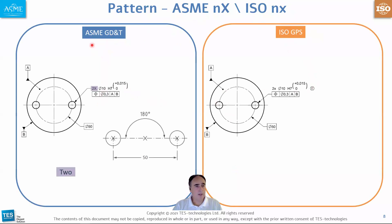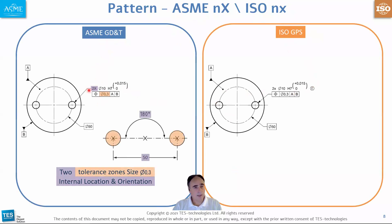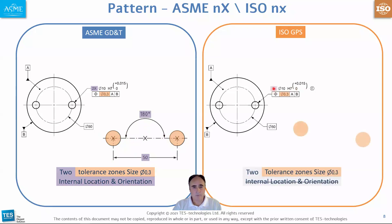What's the difference? In GD&T, when we state two times, we have two tolerance zones which are 0.3 in diameter, and internal location and orientation between the tolerance zones is invoked. In ISO GPS, when we say two times, it also gives us two tolerance zones of 0.3 in diameter, but there are no internal location or orientation constraints between the two tolerance zones.